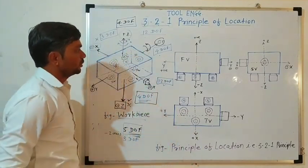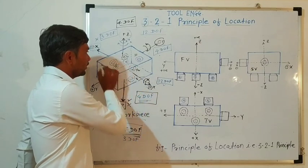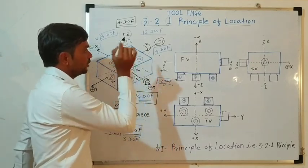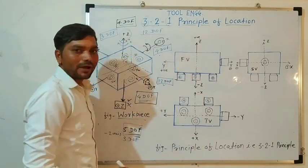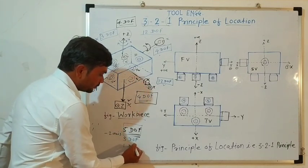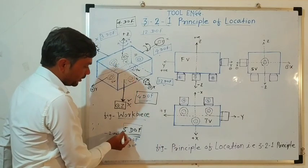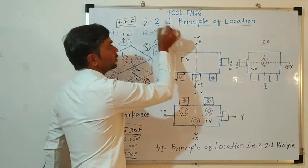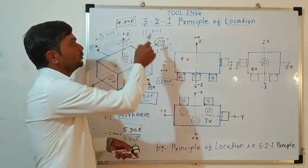Next we have 1 pin located over a plane which is perpendicular to both the bottom plane and the side plane. Because of this 1 pin, it cannot translate along the negative y-axis. So a total of 1 degree of freedom can be restricted by using this 1 pin. If we add these — 5 plus 3 plus 1 — we get a total of 9 degrees of freedom restricted by using the 3-2-1 principle. Out of 12 degrees of freedom, 9 can be restricted by this principle.